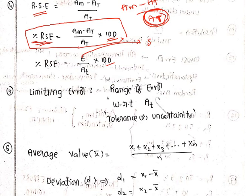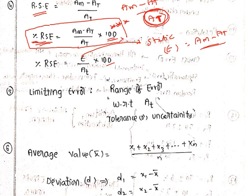E is nothing but the static error, which equals measured value minus true value. When it is relative static error, we write it with respect to true value. If percentage is asked, we write × 100. This is a very important formula. Based on this, they will give you the measured value and true value, and we have to calculate the relative static error accordingly.